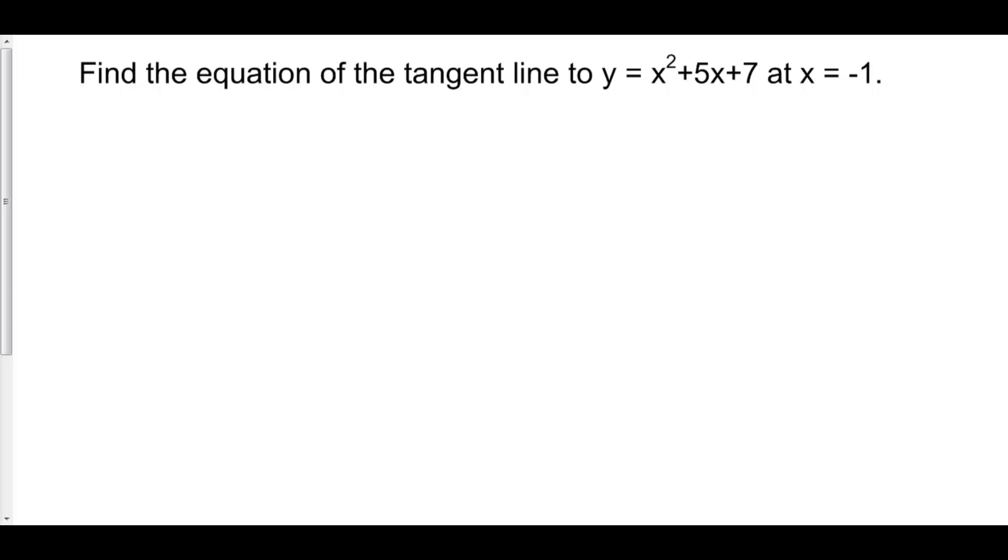There are two things that we need for a tangent line. One, we need a point. Two, we need a slope.